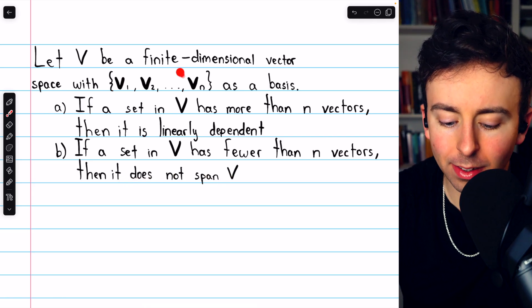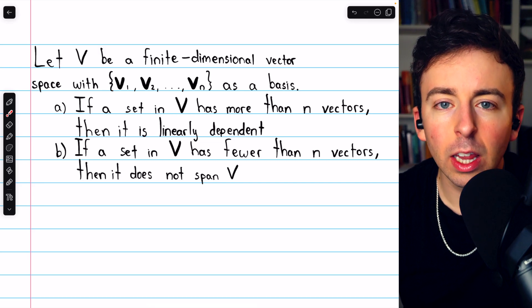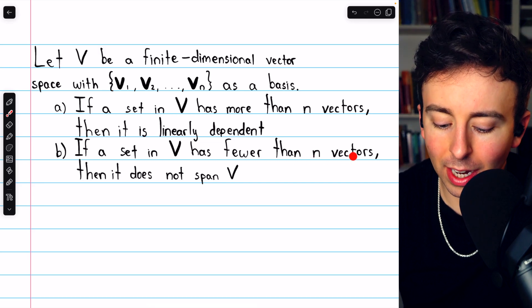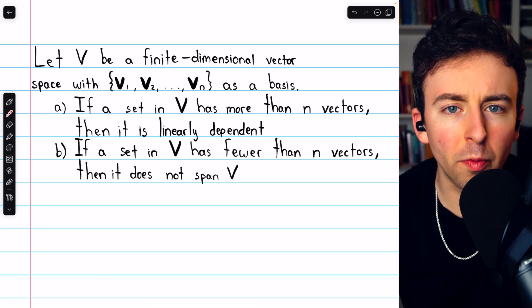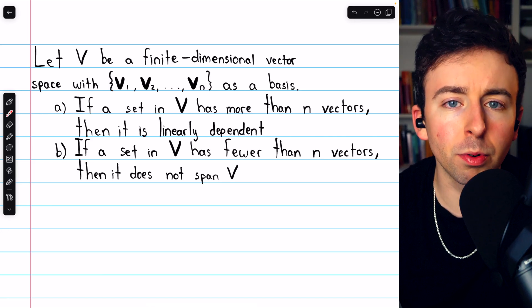Certainly, if a basis for the space has n vectors, there's no way that a set with fewer than n vectors could span that space. These facts are not trivial, but they probably feel pretty reasonable.